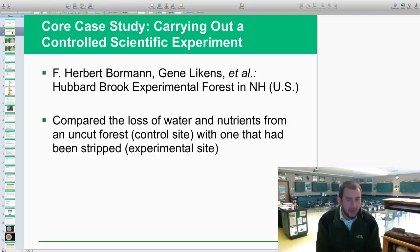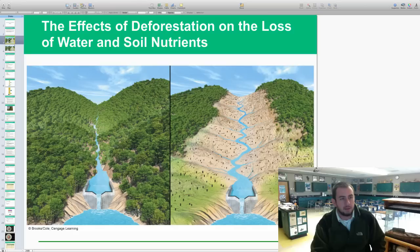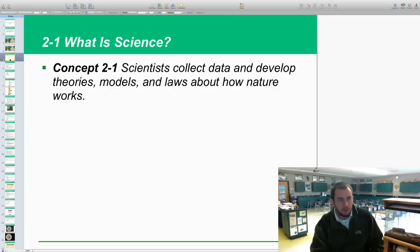They had a control site, which was the uncut forest. They had an experimental site where they actually did the forestry and clear cutting, and then they compared the data between the two. That's just an example of a controlled scientific experiment. We'll get back to this case study a little bit later and return to it in the chapter. You can see the pictures of the control and the experimental group.